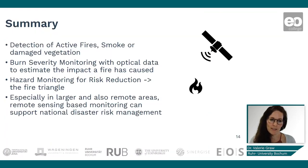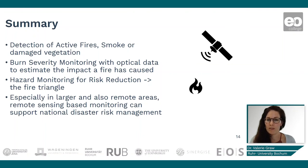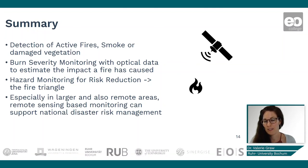In summary, with remote sensing you can detect active fires, smoke, and damaged vegetation — the latter being burn severity monitoring after the fire. We saw how it works using optical data to estimate the impact a fire has caused. You can also do hazard monitoring for risk reduction, thinking about the fire triangle and monitoring its three variables — especially heat stress, but also fuel, such as where there is potentially dry vegetation or dry forest. Especially in large and remote areas, remote sensing-based monitoring can support national disaster risk management, as it is dangerous to enter fire areas, but it also helps us monitor where the damage is, where the fire is occurring, and where it might spread. Thank you for your attention to this fire monitoring MOOC.